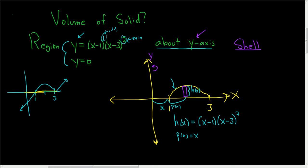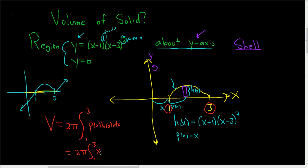And now we're ready to write down the answer. The volume is equal to 2 pi, and we're integrating with respect to x from 1 to 3. The formula says you write p of x times h of x dx. So that's equal to 2 pi times the integral from 1 to 3 of x times (x minus 1)(x minus 3) squared dx. And via the power of calculators, this is equal to 24 pi over 5.